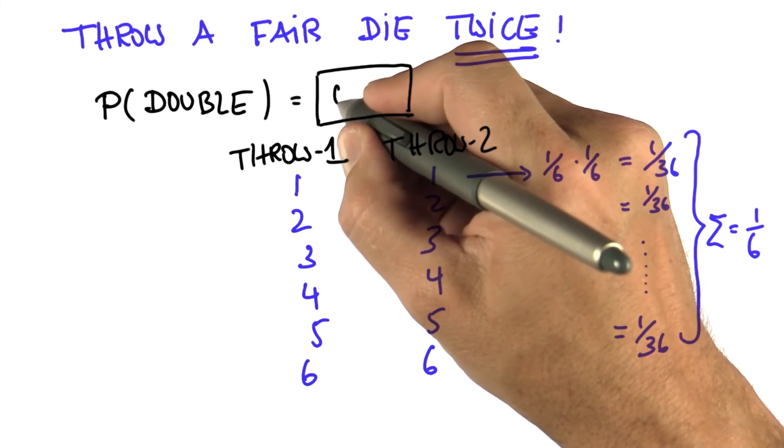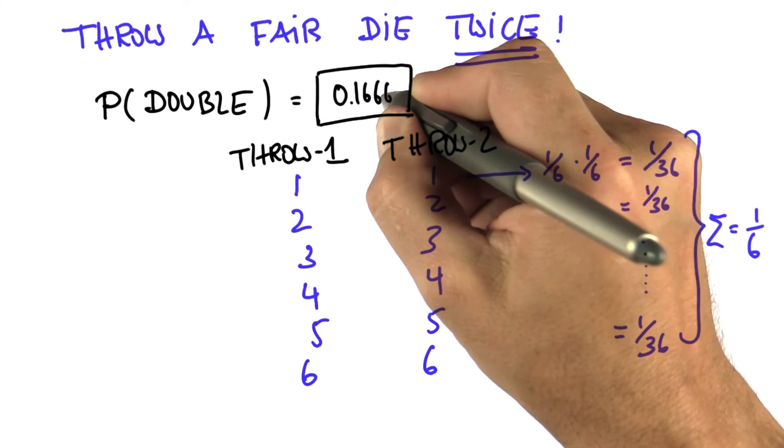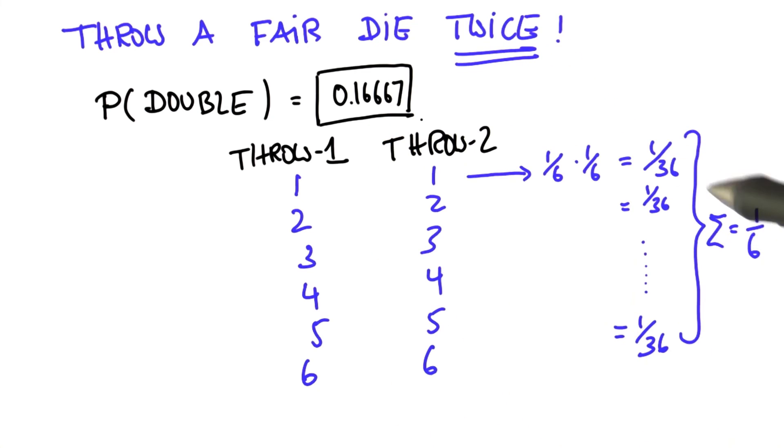And I can simplify this back to 1/6. That's just the same as 0.1666... or so. So 1 in 6 times, you will get a double.